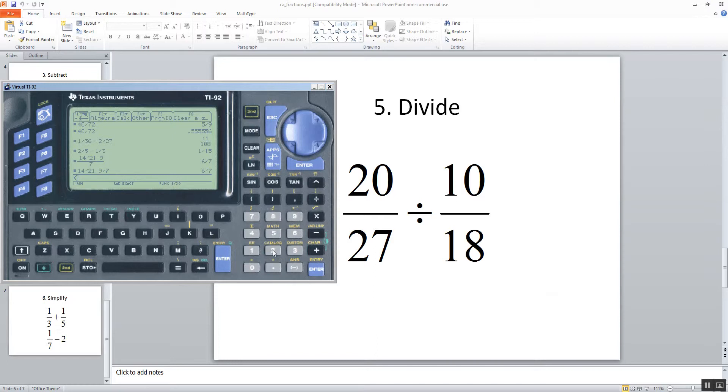So I do beginning parentheses 20 divided by 27 closing parentheses divided by beginning parentheses 10 divided by 18 closing parentheses. And then you push enter. And it gives us our answer 4 thirds.